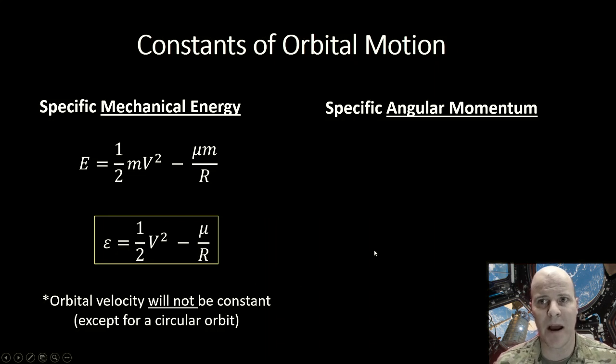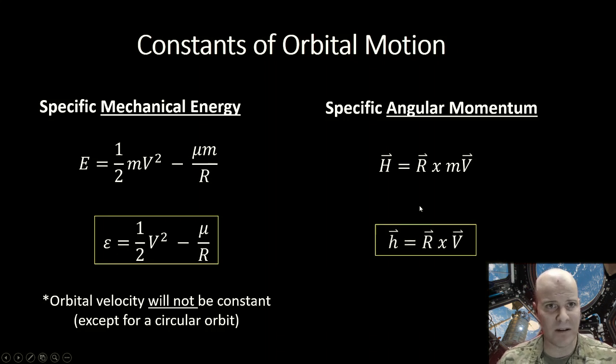So let's talk about our specific angular momentum and what the implications are for that being constant for our orbit. Angular momentum is defined as h equals r cross mv. If we divide out in a similar fashion the mass of our satellite, we end up with specific angular momentum, and that is little h vector equals the r vector cross the v vector.